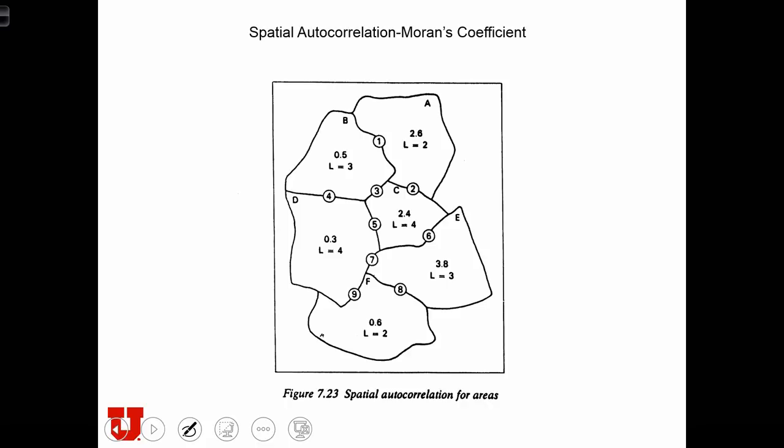Let's work out an example of calculating Moran's I manually for this small map pattern that we have in front of us. In this case, each of our polygons, A through F, have an x value indicated by this number over here. These are our data values, and these are our labels for our different zones in the map.